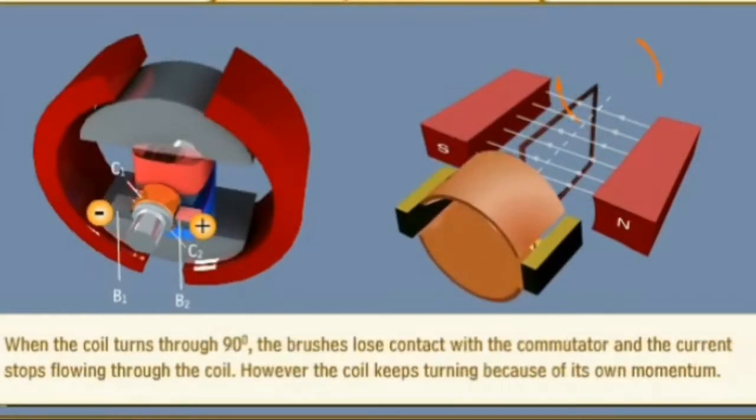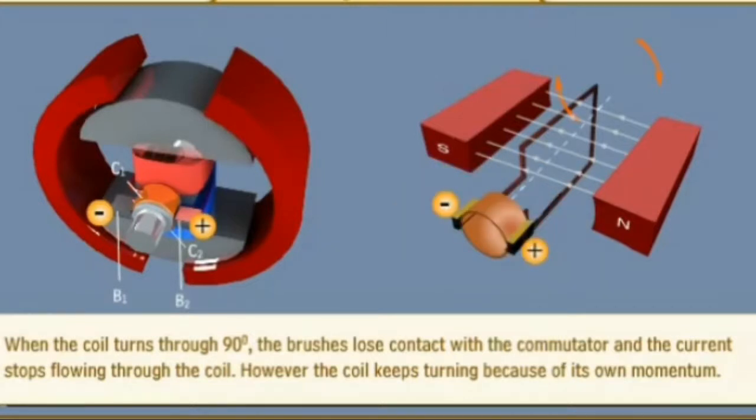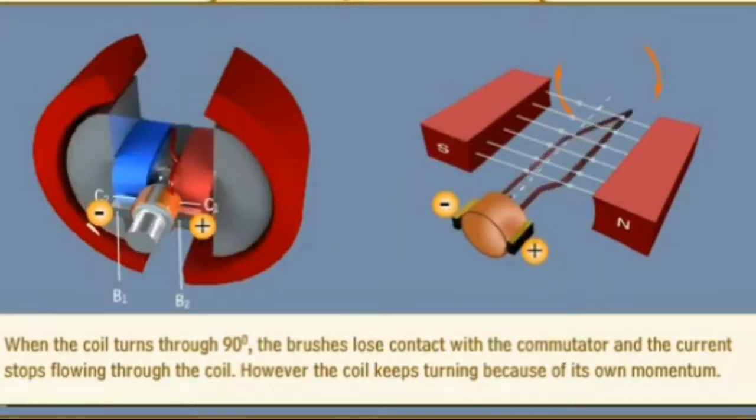When the coil turns through 90 degrees, the brushes lose contact with the commutator and the current stops flowing through the coil. However, the coil keeps turning because of its own momentum.